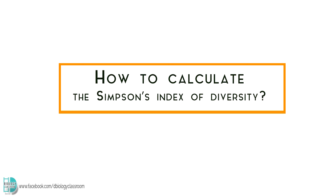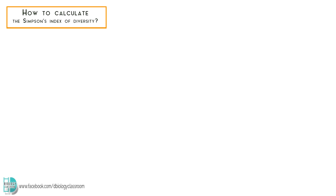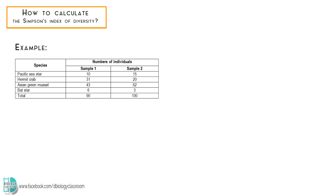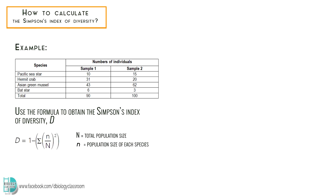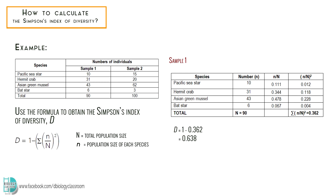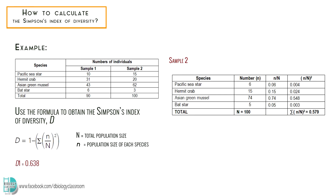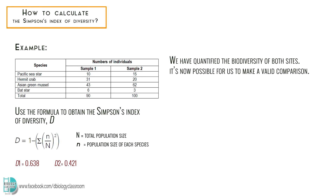Now let's go through the steps to calculate the Simpson's Index of Diversity. Two ocean habitats were sampled and several species of animals were found. A formula can be used to obtain the Simpson's Index of Diversity, D, for both habitats. In this formula, the capital N is the total population size, and the small letter n is the population size of each species. Let's arrange all the data in a table so it is more organized. For the first habitat, D is equal to 0.638, while for the second habitat, D is equal to 0.421. We have quantified the biodiversity of both sites, so it is now possible for us to make a valid comparison.